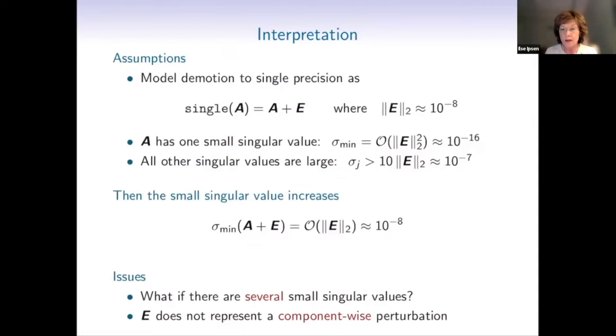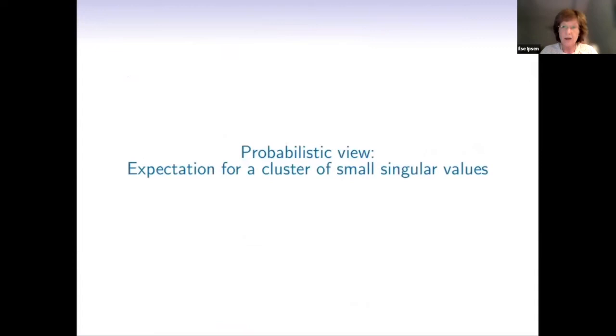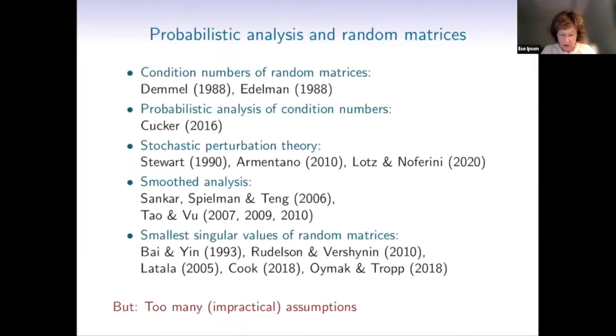Okay. However, what if you have more than one small singular value? And E does not represent a component-wise perturbation. It's just the generic off-the-shelf perturbation. So then we'll take a probabilistic view. This is all ongoing work, nothing is finite. So there's a lot of probabilistic analysis in random matrices. Jim and Alan have worked on that. However, unfortunately, many of the results are too fuzzy and the assumptions are impractical.